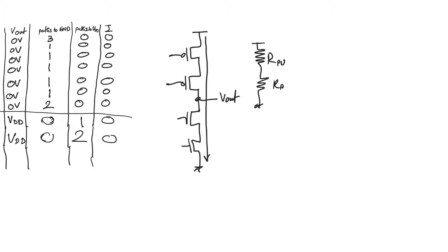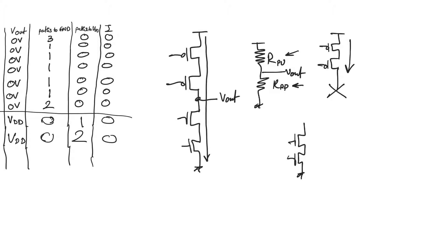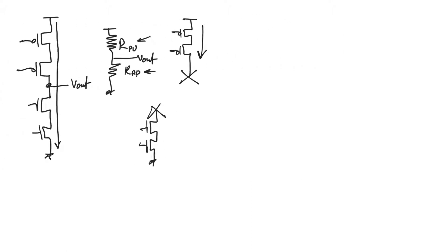This is very reminiscent of ratioed logic — exactly what happened there: a path open from supply to ground causing steady-state current, leading to a potential divider between the pull-down driver and the pull-up load. This is not proper CMOS operation. Proper CMOS operation says: if there's a path available to supply, there must be an open circuit on the pull-down network — no paths available to ground. This guarantees zero current and allows the pull-up network to short the output to supply. Conversely, if there's a path to ground, there must be zero paths to supply, allowing the pull-down network to short the output to ground.